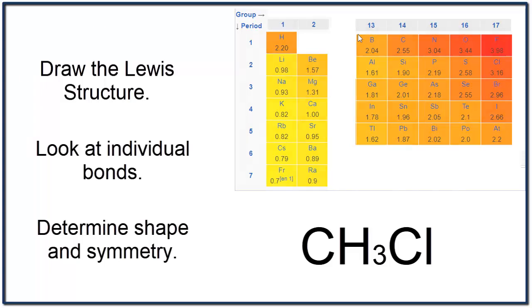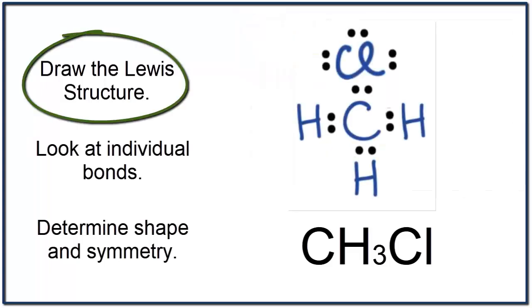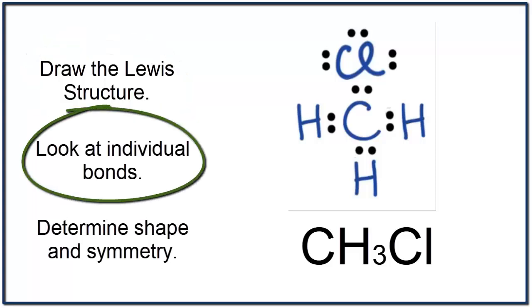For CH3Cl, we have the Lewis structure here. And we can calculate the EN difference for each of the bonds. You can see that CCl, that's a polar bond. Well, the CH bond is nonpolar.